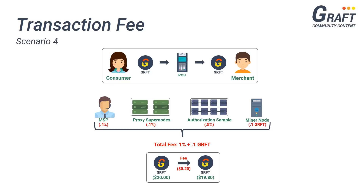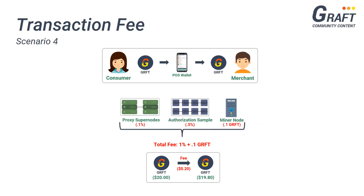For our final example, let's assume the exact same scenario, only the merchant doesn't require a traditional hardware terminal and will instead opt for using the Graft mobile point-of-sale wallet. In this case, the merchant wouldn't require the services of a merchant service provider, and the overall transaction fee would drop from 1% plus 0.1 Graft down to 0.6% plus 0.1 Graft. Using the same $20 Graft transaction as an example, the merchant would only pay a fee of 12 cents and receive a total of $19.88 in Graft.